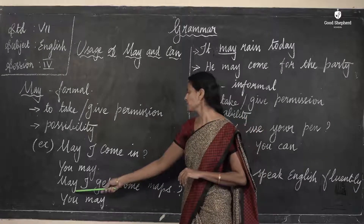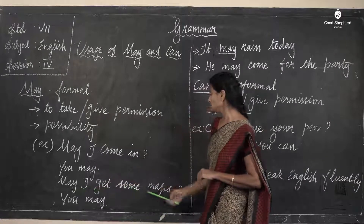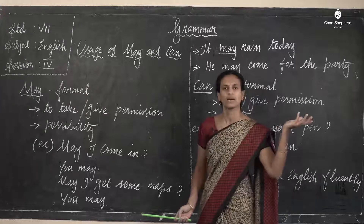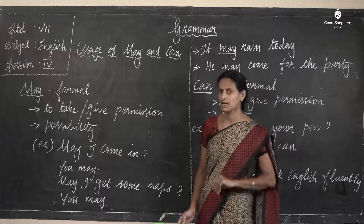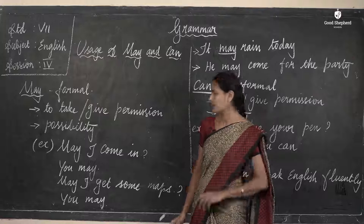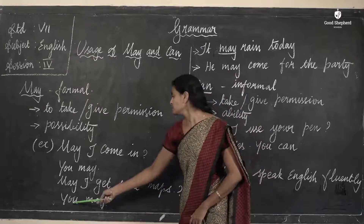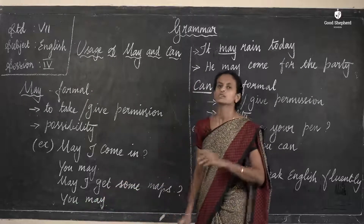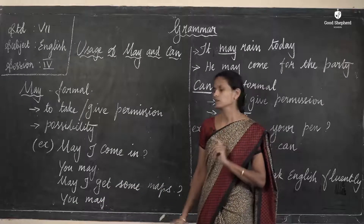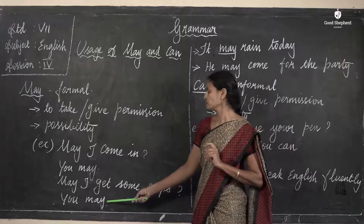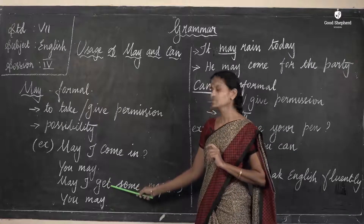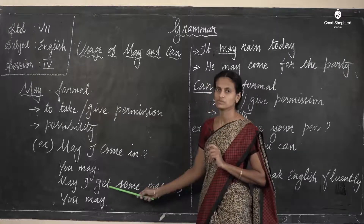Next example: 'May I get some maps?' — you are asking the teacher, 'May I get some maps from the lab?' — the geography lab or social lab. The answer you get from your teacher is 'Yes, you may.' So this is giving permission, and asking is taking permission.